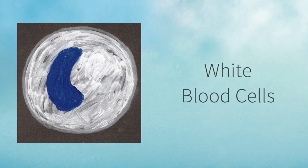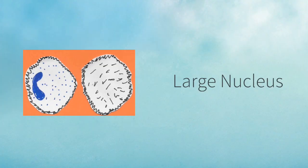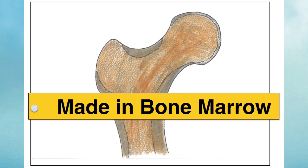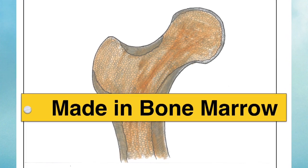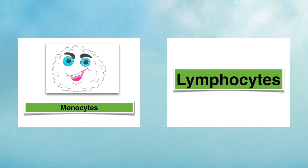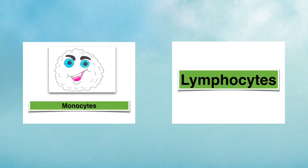The next set of blood cells are the white blood cells, otherwise referred to as the leukocytes. They're usually very identifiable because they have a large nucleus. They are also made in the bone marrow of the bones mentioned previously. The role of white blood cells is to fight infection. There are two groups of white blood cells: the monocytes and the lymphocytes.